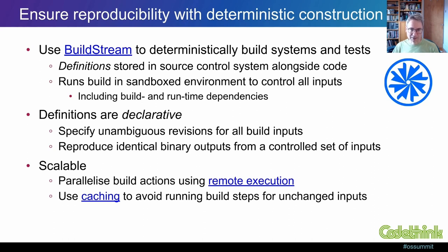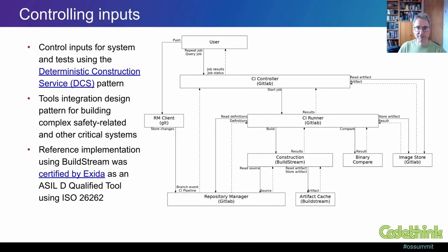The builds are also performed in a sandboxed environment, which can eliminate the possibility of untracked dependencies being incorporated as part of the construction process. Doing all of this building, especially if you're building from source code and having to pull all that source into your sandboxed environment, could be a huge overhead, but Buildstream has been designed to do this at scale. It can be configured to parallelise build actions using multiple build instances using the Remote Execution API, originally developed for Bazel. It also uses remote artifact caching to avoid rebuilding artifacts that have not changed since the last time they were built, and we can be confident that they haven't changed because we control all the inputs. We can be certain that we have our inputs under control by using Buildstream as part of a continuous integration workflow, following the deterministic construction service design pattern.